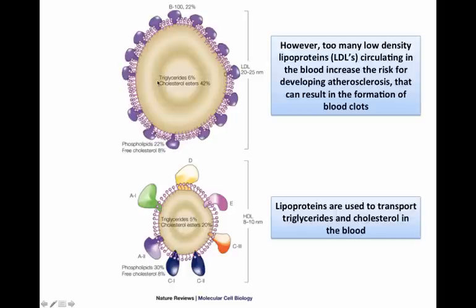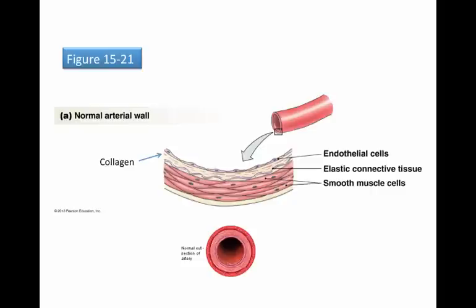So how do these low-density lipoproteins contribute to eventually a clot forming? If we look at the lining of an arterial wall, we can see that there are several layers. We have our layer of endothelial cells, which are in contact with the blood. And then beyond that, we have collagen fibers. When collagen fibers get exposed to the blood, they are what trigger the clotting process. And then we have a layer of smooth muscle cells.